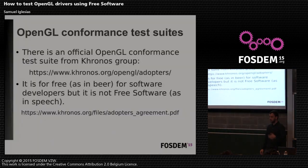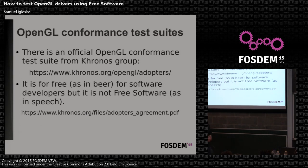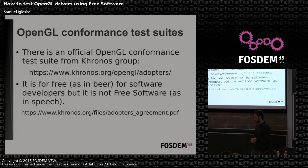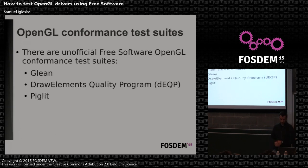The Khronos Group provides their own official OpenGL conformance test suite, but although it's free of charge for software developers, it's not free software. You have to sign an agreement that says you have access to the source code, but any modifications you make to that source code cannot be redistributed to third parties. So thanks to the community, we have official free software alternatives for those cases.